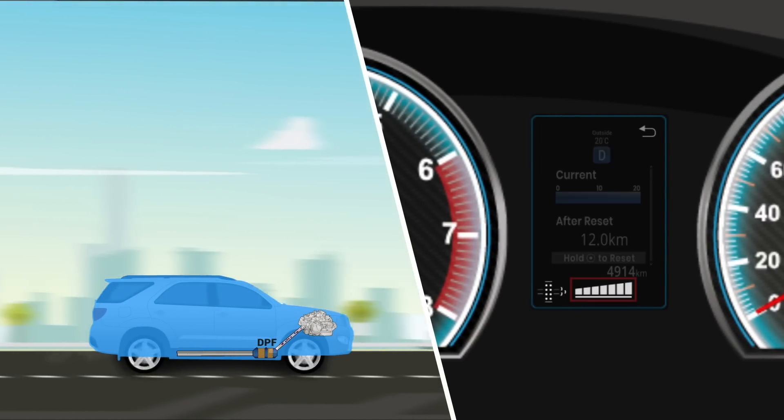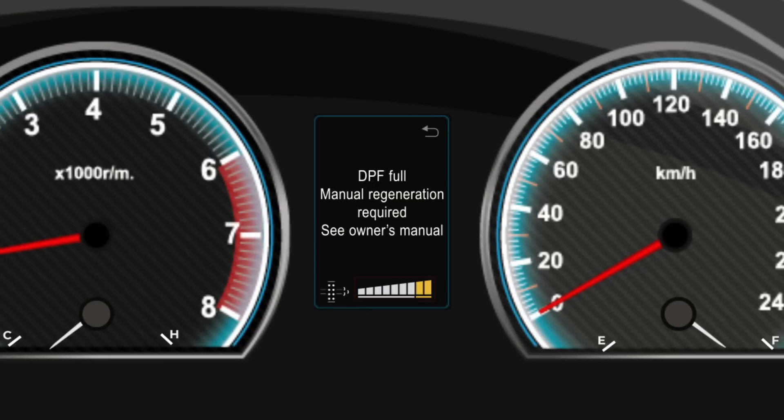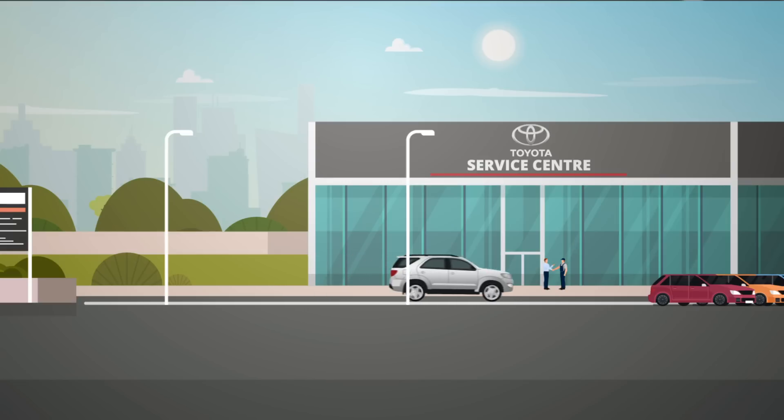If the number of lines displayed is between 7 and 9, manual regeneration might be required. If all 10 lines are highlighted, have your car immediately inspected at the nearest Toyota dealer.